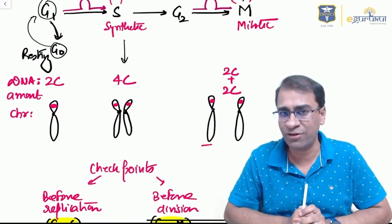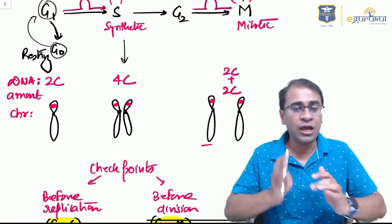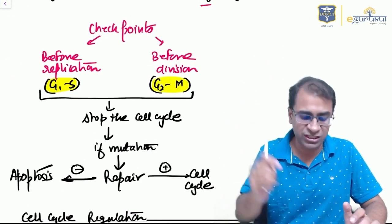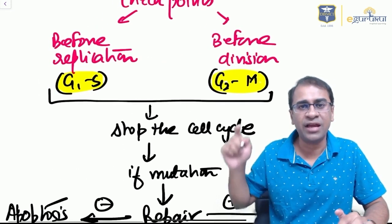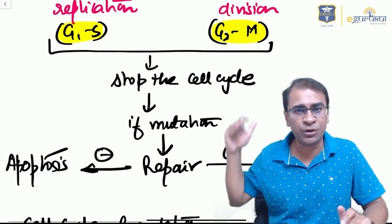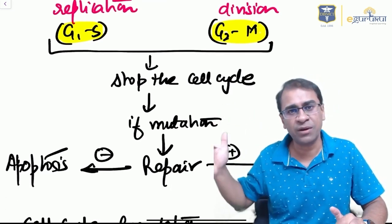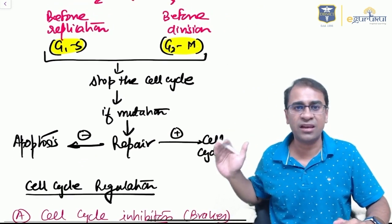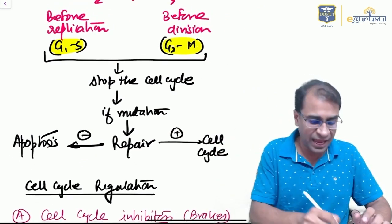To understand mutations, we have to understand the checkpoints: G1-S checkpoint and G2-M checkpoint. A cell will stop at a checkpoint, and if there's a mutation, will cause repair if possible, or the repair goes back to cell cycle. But if not possible, the cell has to undergo apoptosis.